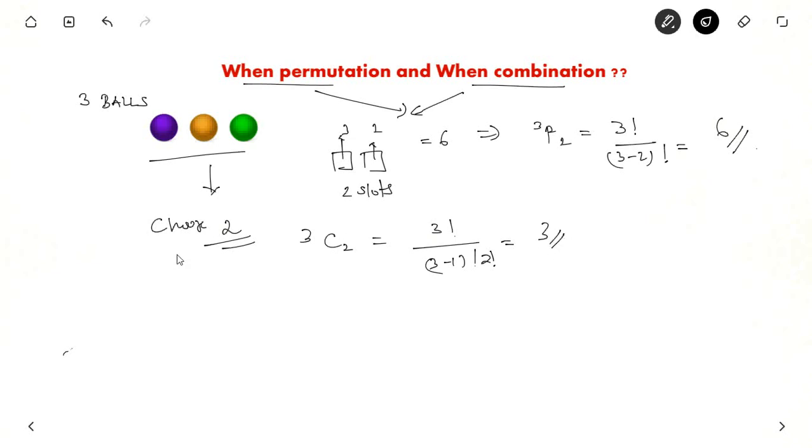So what is the difference here? In permutation, order matters. It matters whether you put the blue ball in the slot first or green ball in the slot first or any of it like that. Order matters.